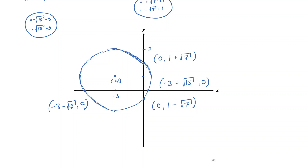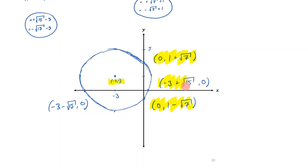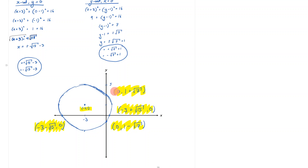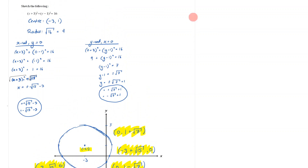Make sure you've labeled the center and used the radius correctly to get a nice circular shape and to know which side the intercepts fall on. Check that you've labeled the center, the y-intercepts, and the x-intercepts. These are a bit tricky to draw but that's how you go about it.